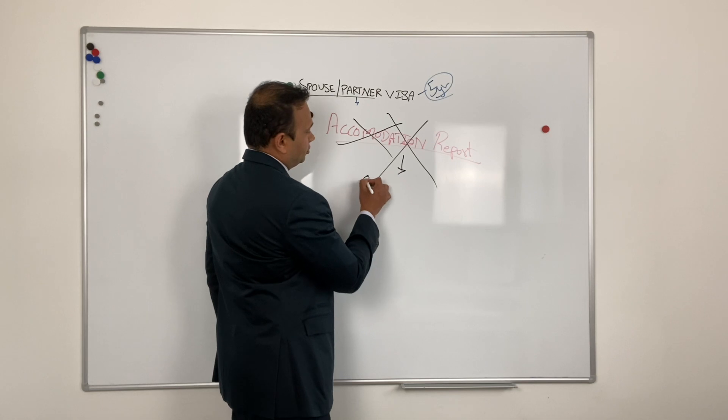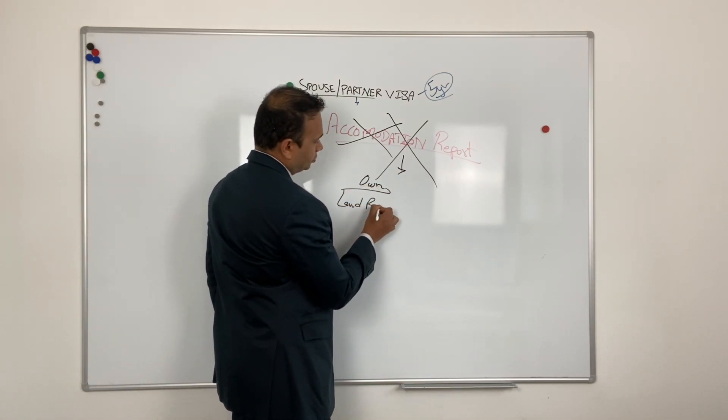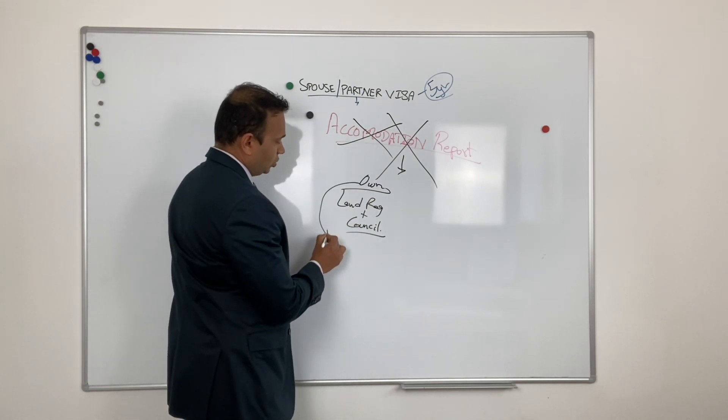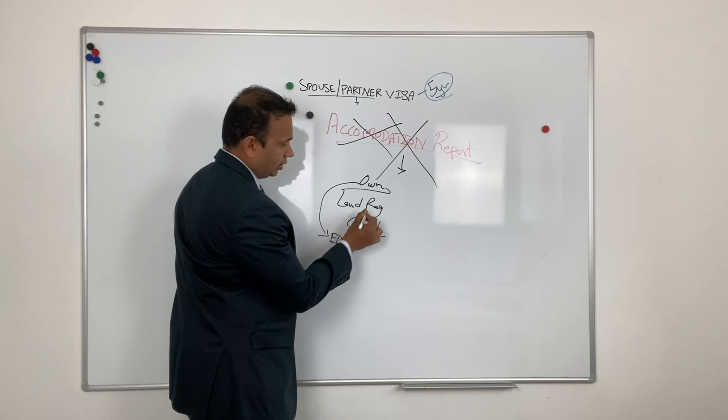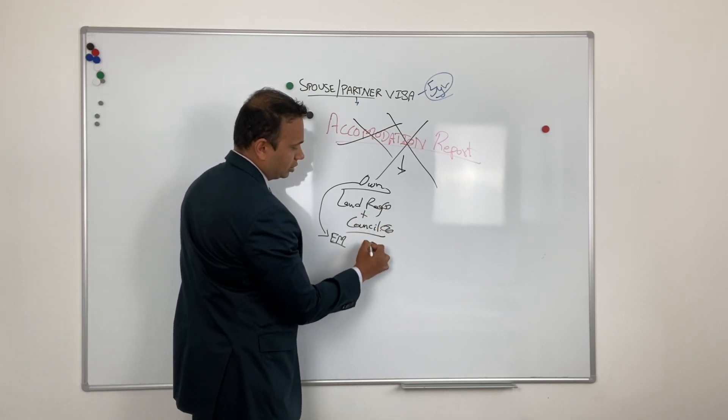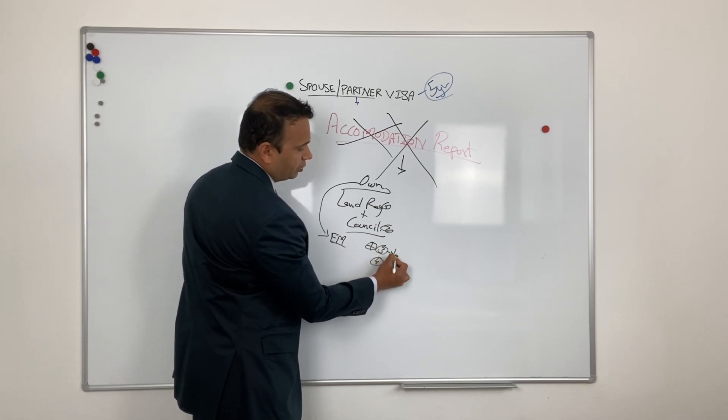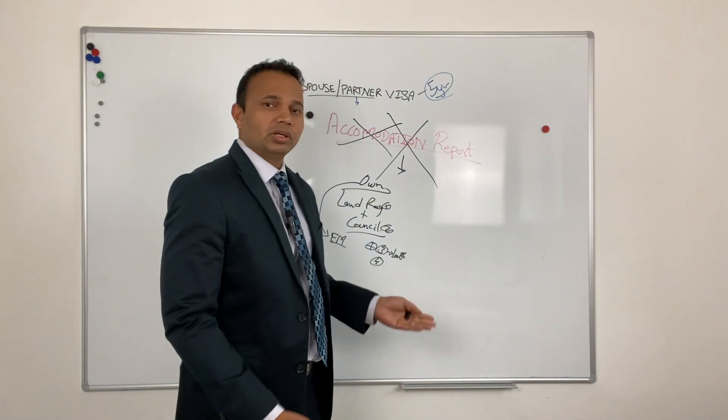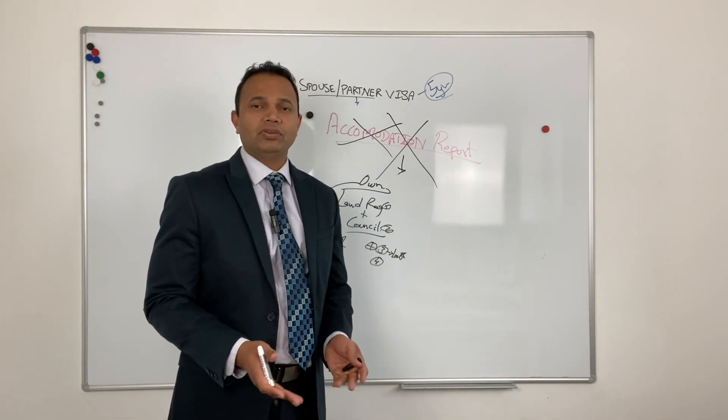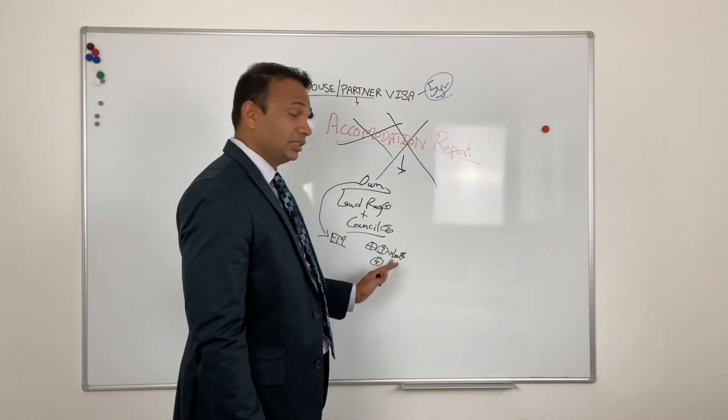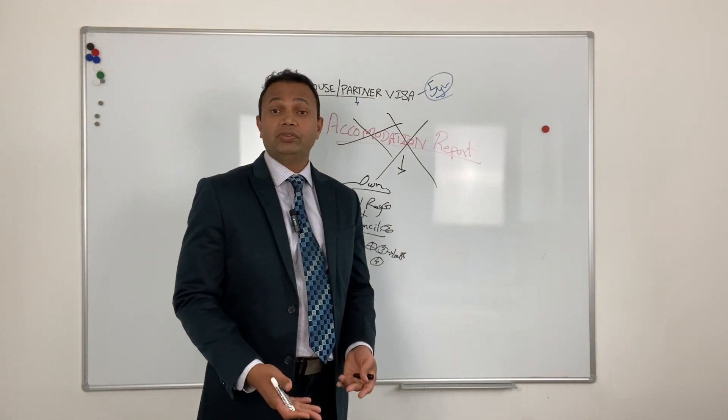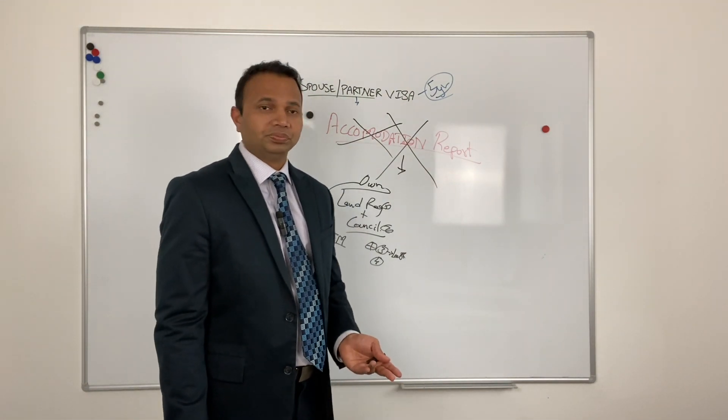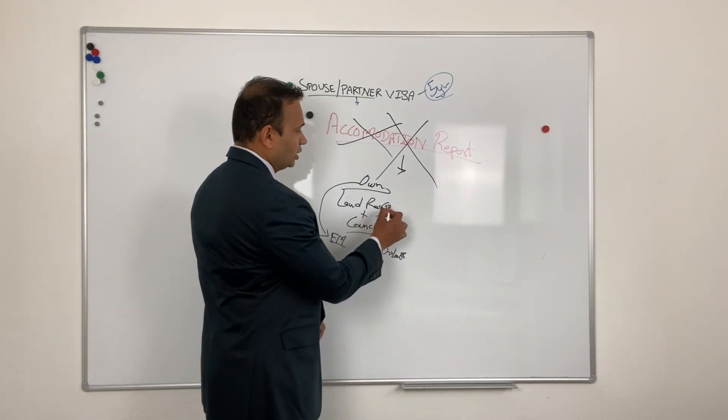If you own it, then land registry plus council tax bill. If someone else is owning it, say a family member, then one, two plus three and four - letter from the family member confirming that I, Mr. X, own this property. I am happy for Mr. Y and his wife or her husband to live in my property, and that's it. That is the main confirmation. Once the visa is approved or they are already living, they can state whatever extra things. But that's the main confirmation they want - a simple letter confirming. You can put in extra facts also, how long they have been living, etc. So council tax bill plus land registry if you own the property.